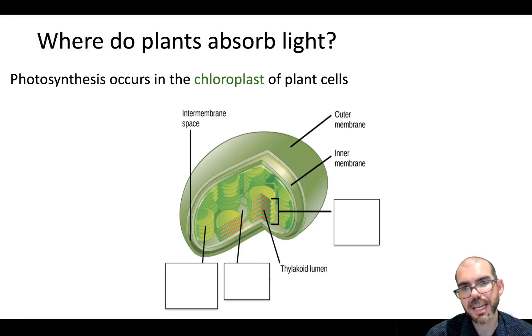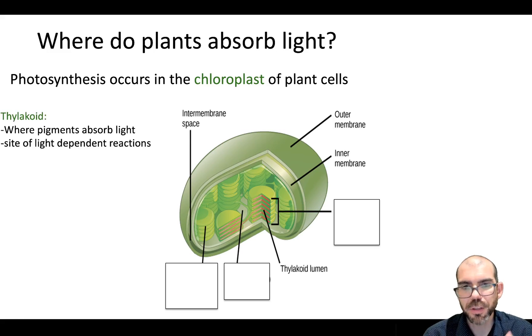To get more specific about the anatomy of a chloroplast, within the chloroplast, you can see these small stack disks. These are called thylakoids. Thylakoids are where we find pigments in the plant, those molecules that absorb light energy. And this is where a reaction called the light-dependent reaction is going to occur. It's a reaction that requires light, and we'll cover it in the next video.